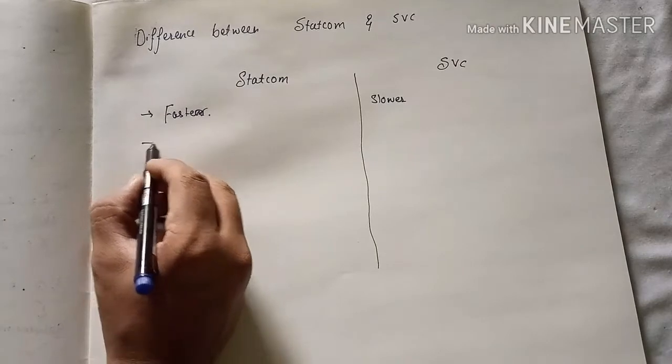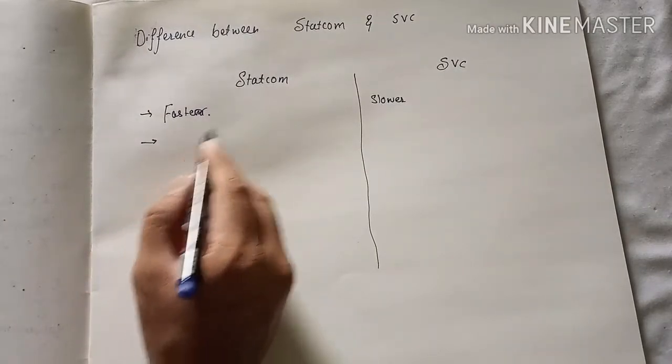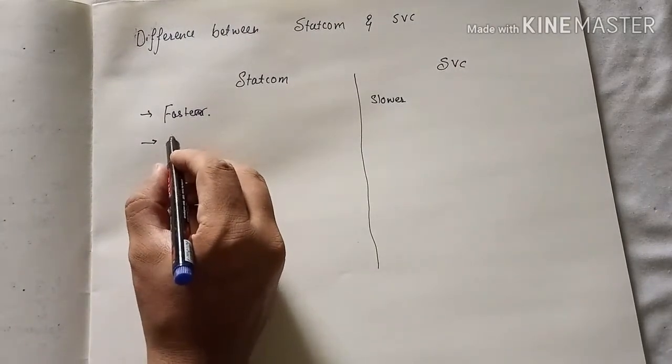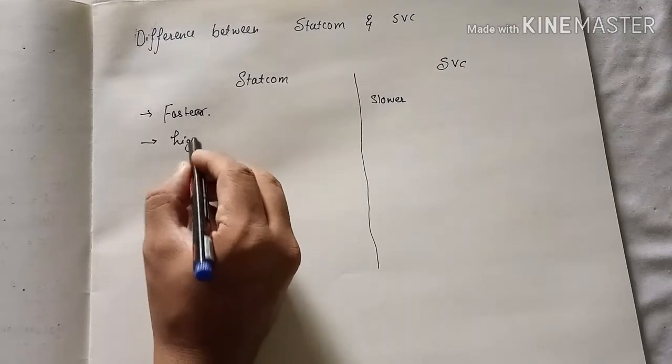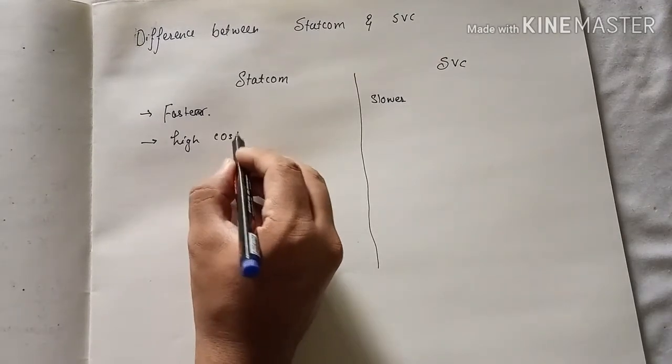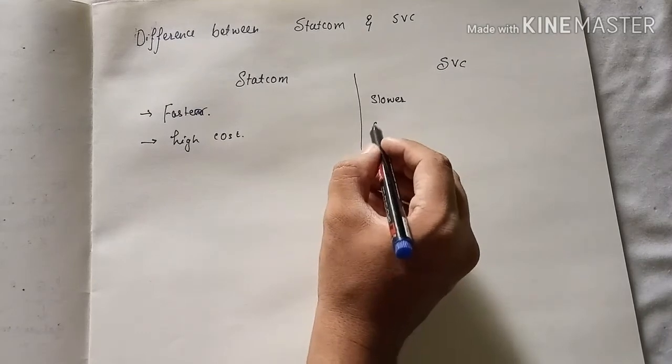The second difference is that the STATCOM cost is high, and the cost of the SVC is low.